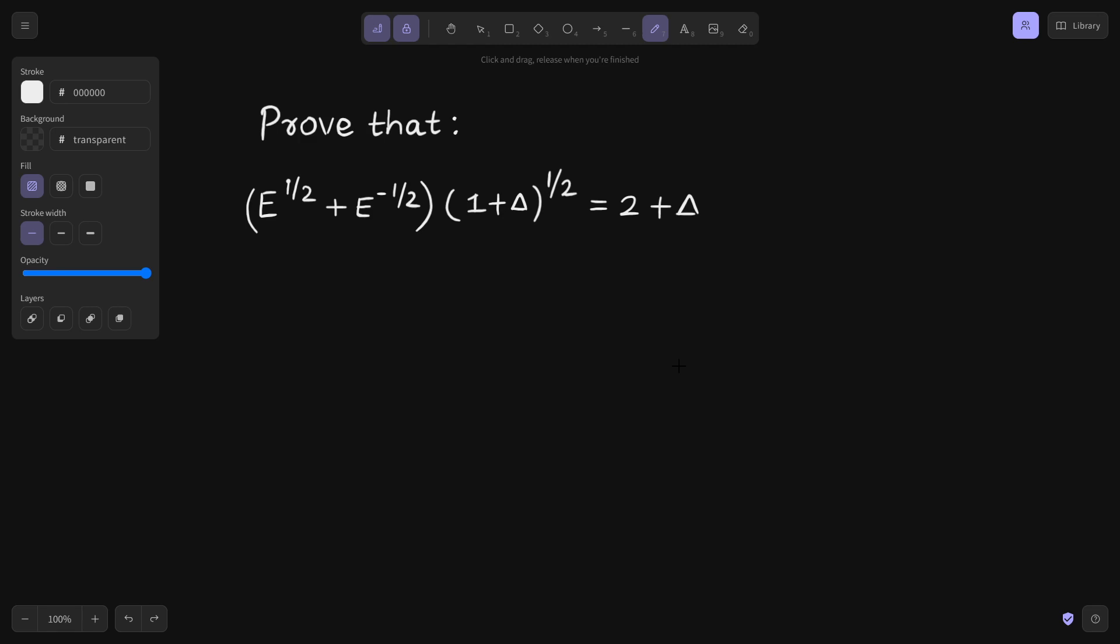So we have to prove that E is shift operator and delta is forward difference operator. E^(1/2) plus E^(-1/2) and we have (1 plus delta)^(1/2), this gives 2 plus delta.